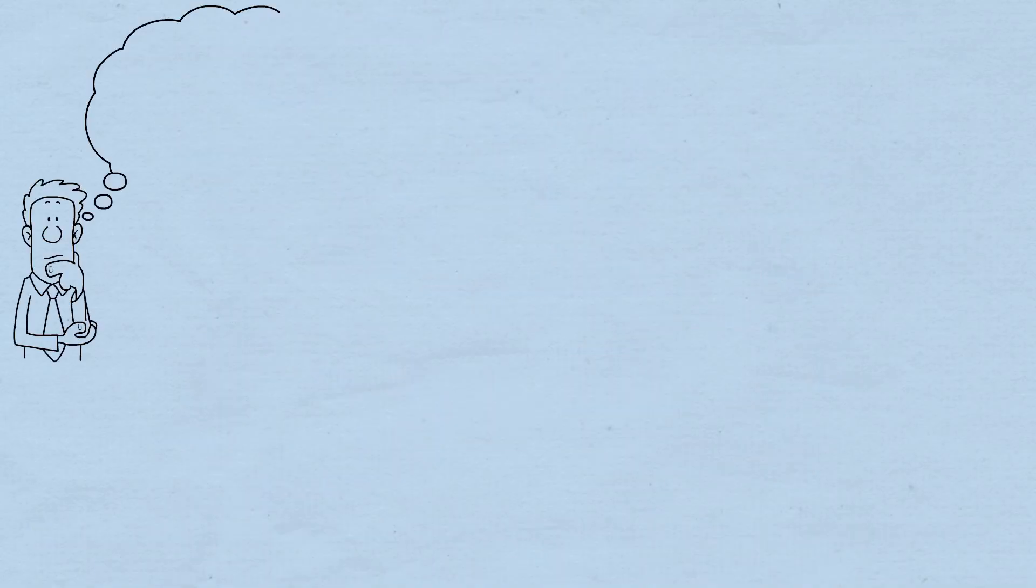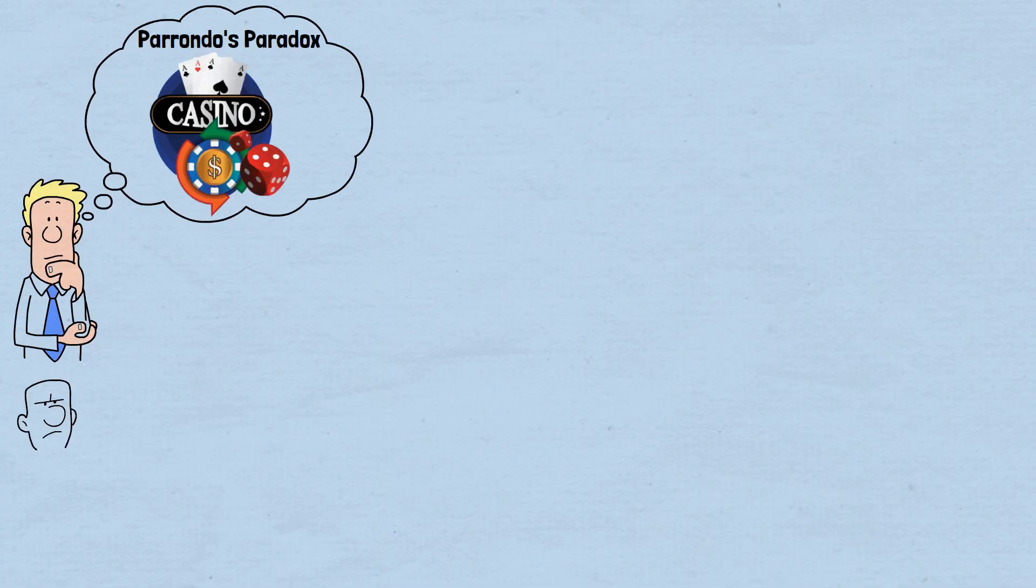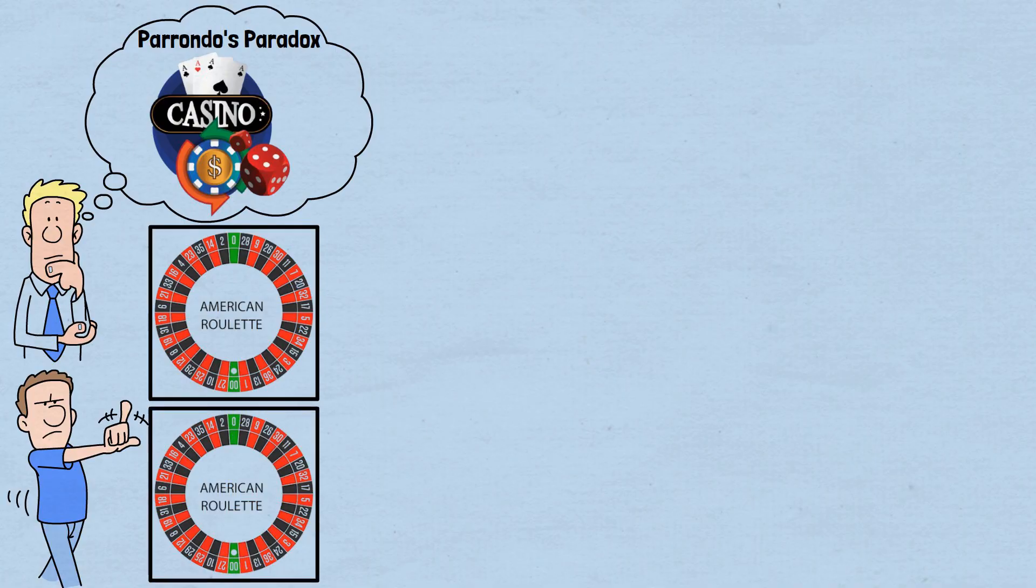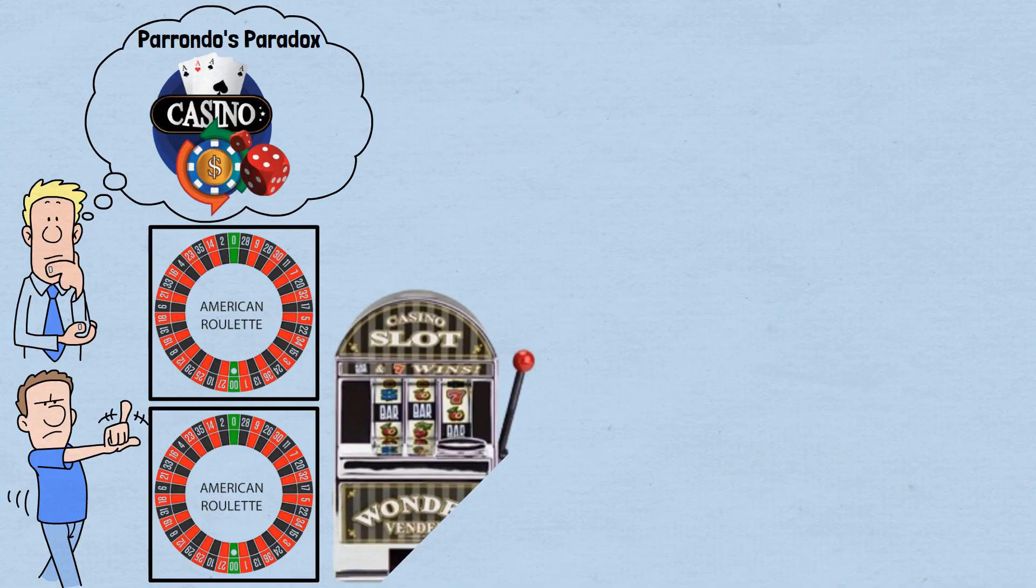At this point, you might be wondering whether you can use Parrondo's Paradox to beat real casinos. The answer is definitively no. Real casino games are specifically designed to be independent events. Each spin of a roulette wheel is completely separate from every other spin. Each pull of a slot machine lever is isolated from all previous pulls. Each hand of blackjack, when properly shuffled, doesn't depend on the previous hand's outcome.